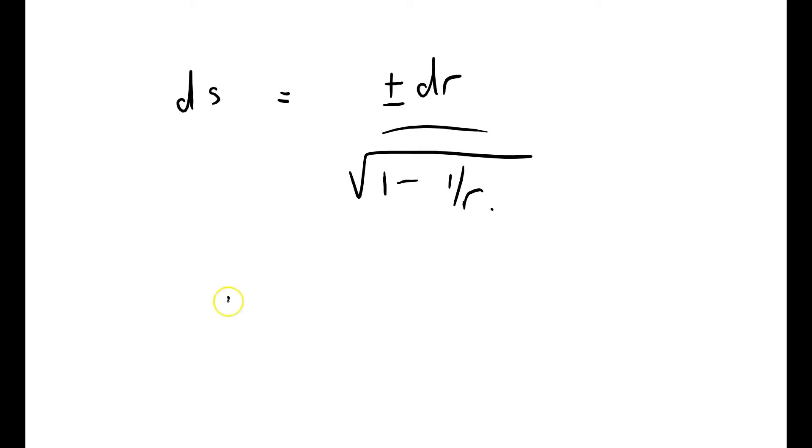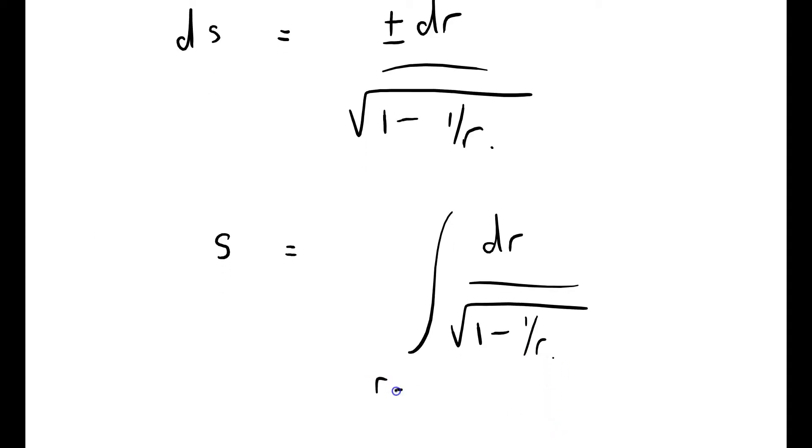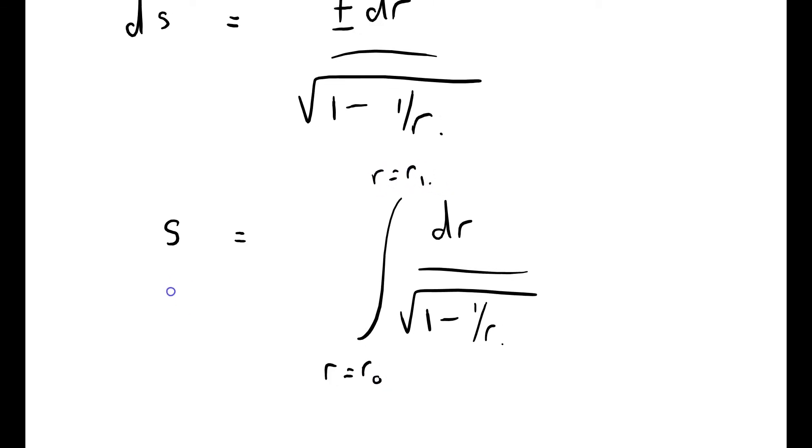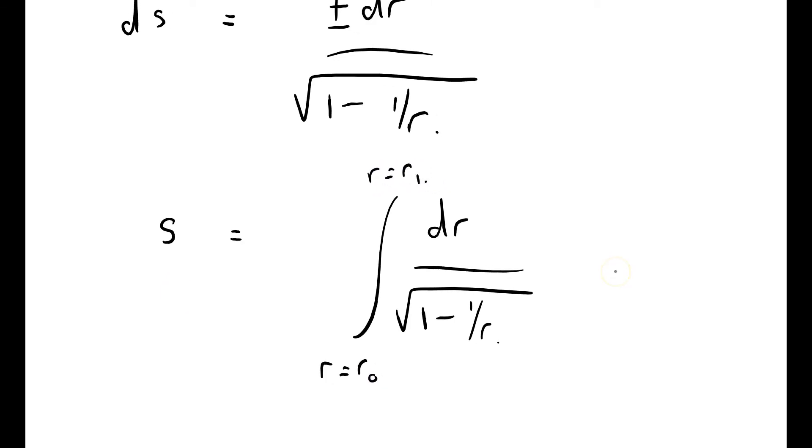So that says that the total arc length s equals the integral of dr over root 1 minus 1 over r, from r equals r0 for the inner circle to r equals r1 for the outer one.